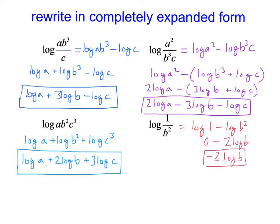And the slightly faster way to view this one is that it's a reciprocal. So it's going to be negative whatever was in there in the bottom, negative log B squared. So negative 2 log B is just another way to do it.